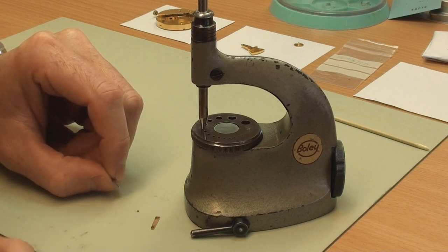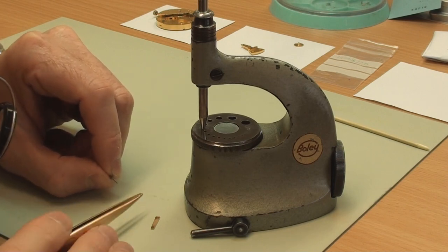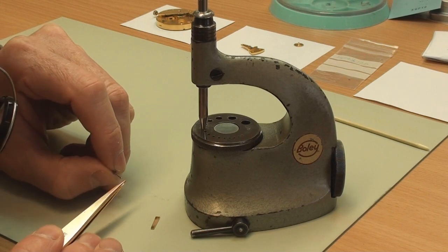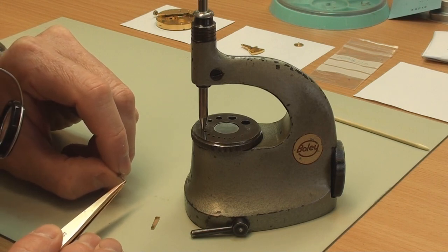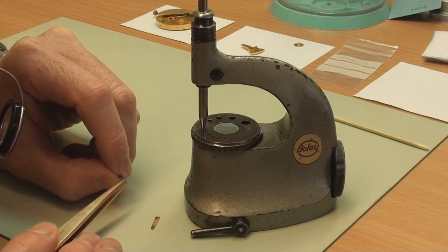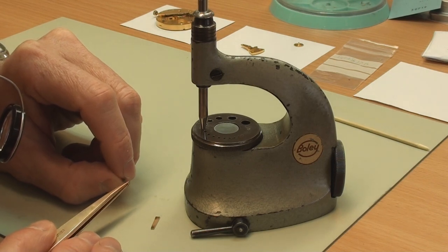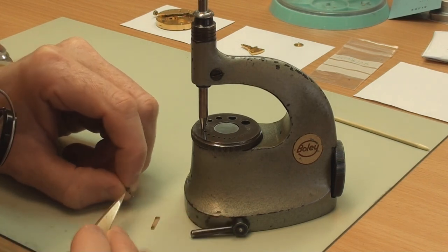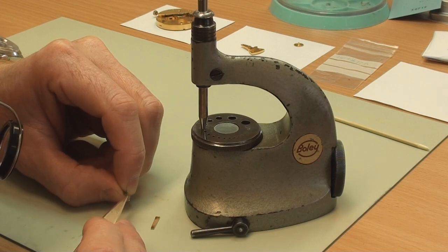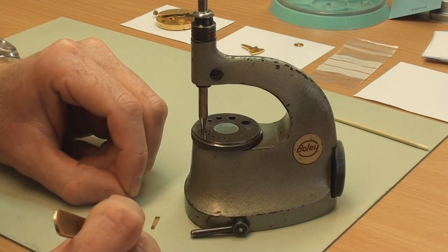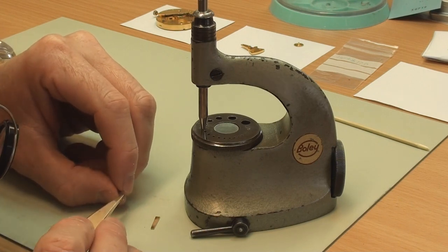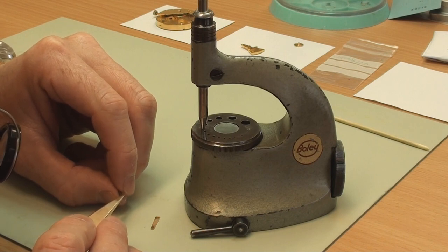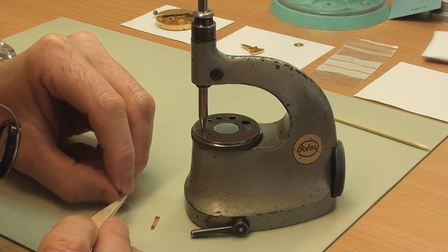In order to gauge how much burnishing we have to do, we first of all just try the jewel on the pivot like so, and I can tell that jewel is just a very snug fit at the moment. We want to get a bit of movement in that jewel hole in order to prevent binding.